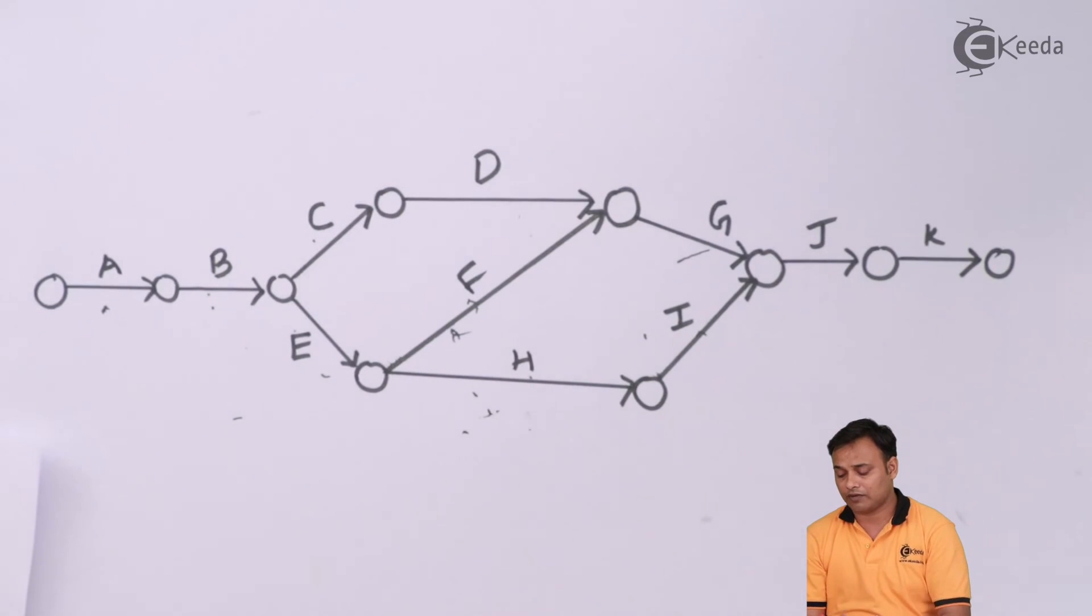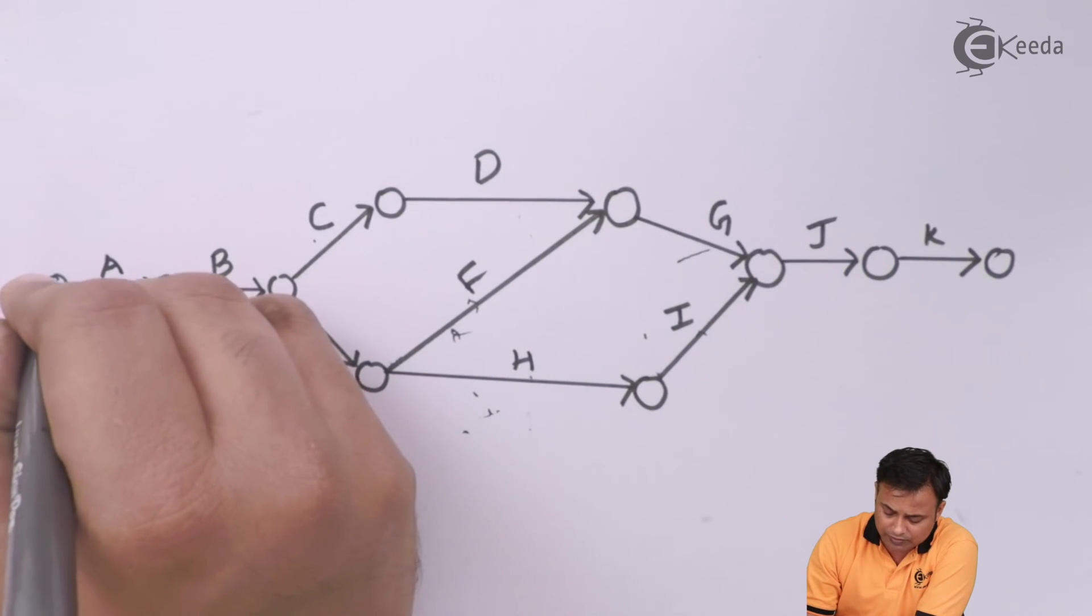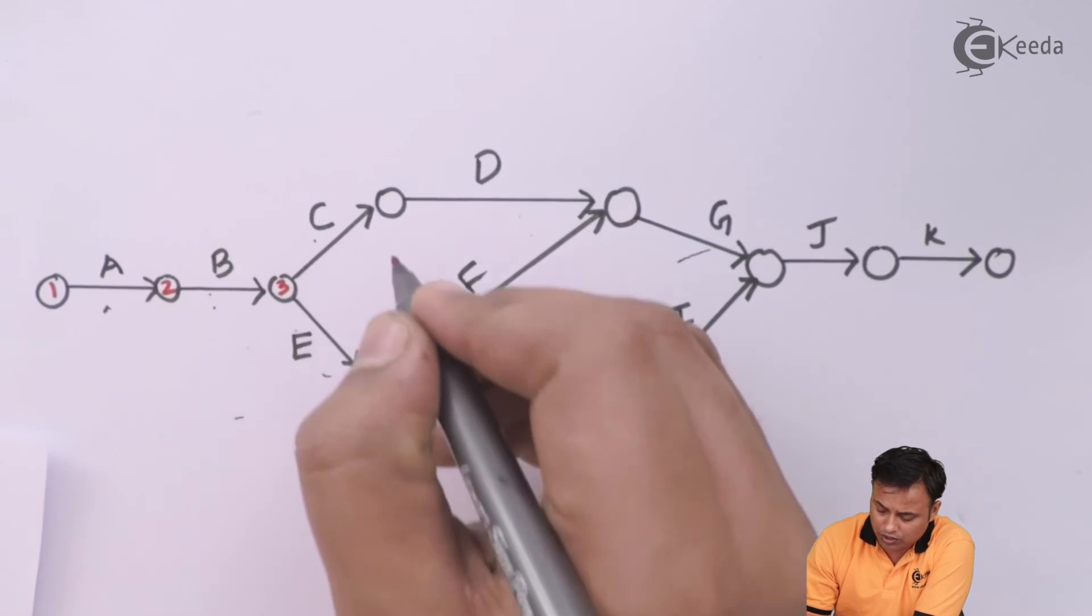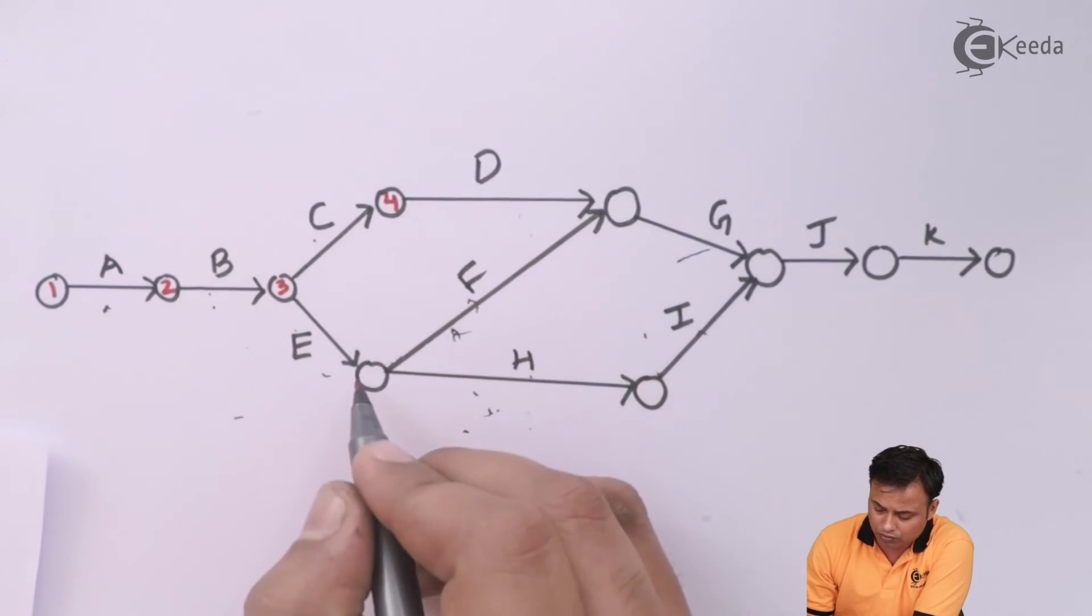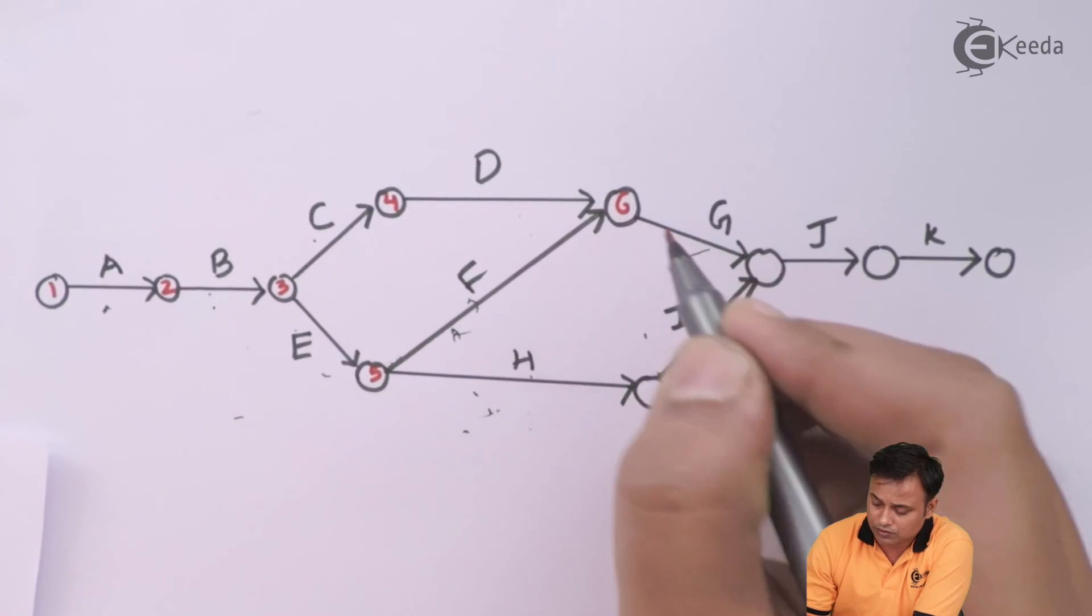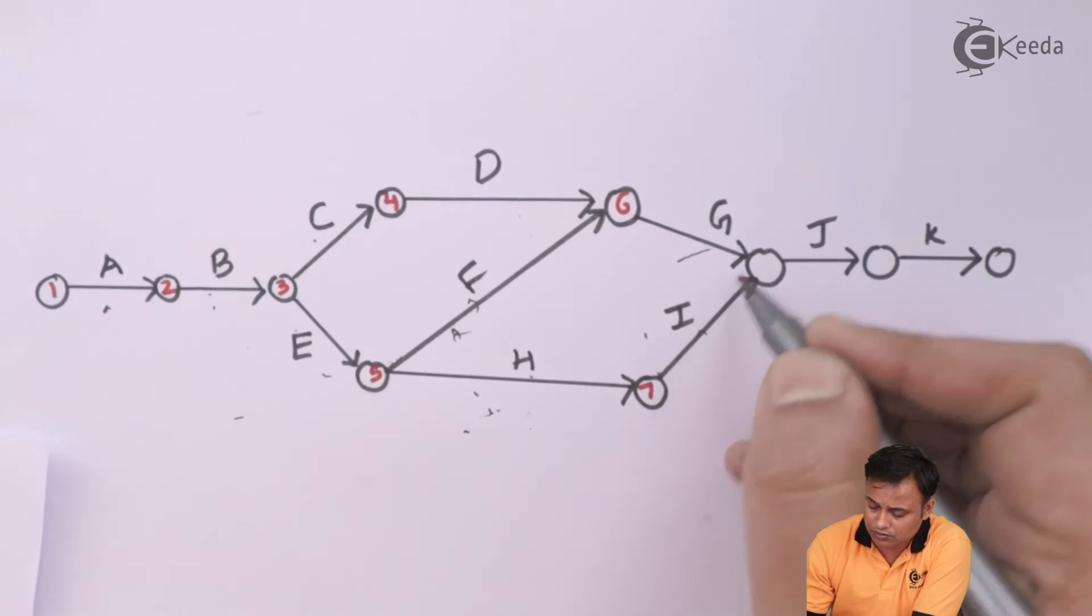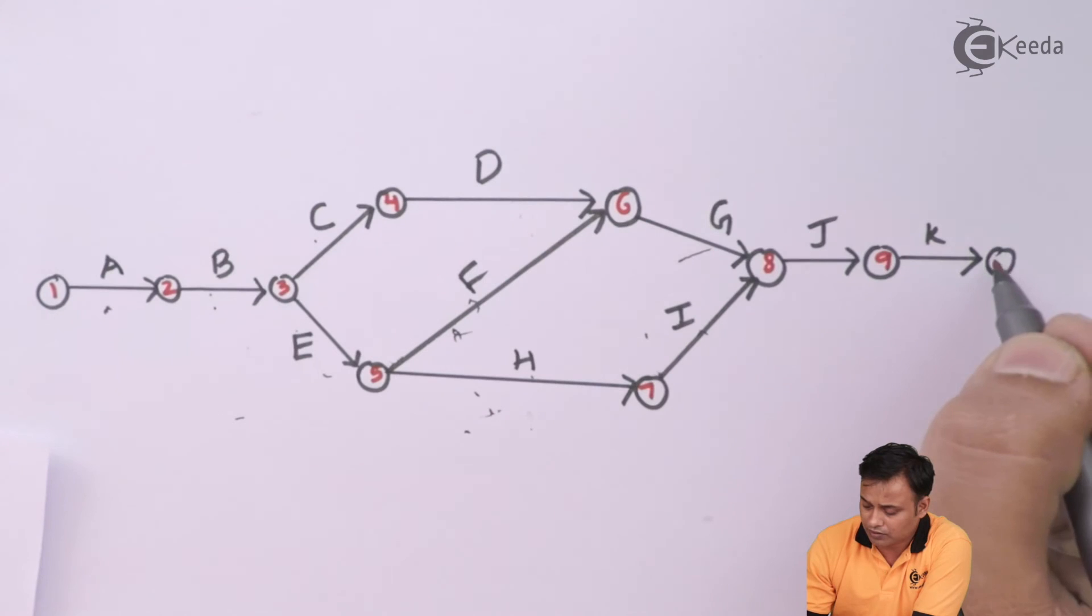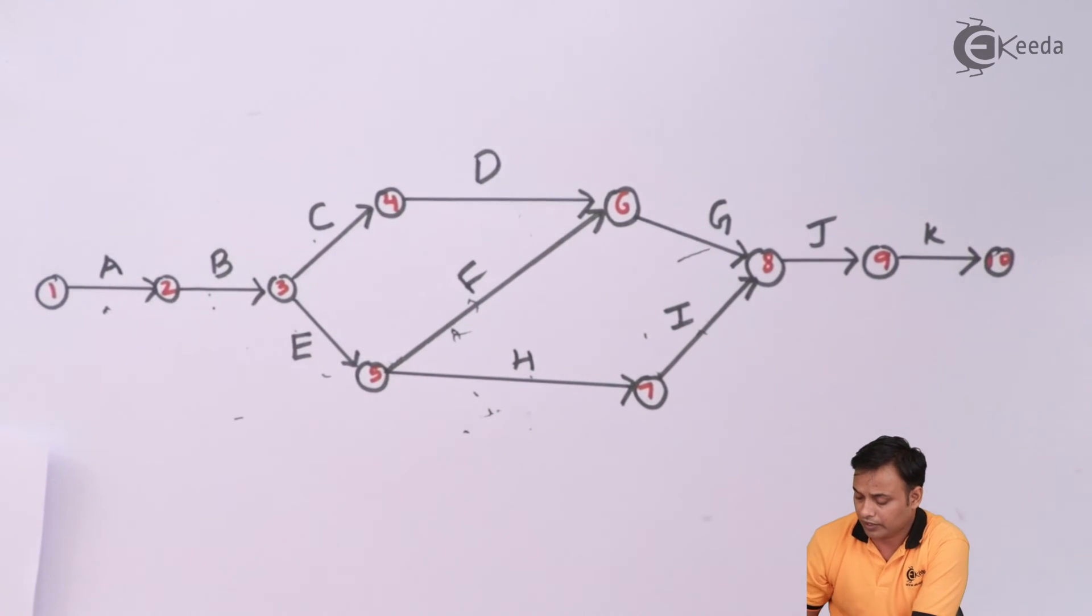Now numbering the diagram. I will always prefer to draw the numbers from left to right. So left-most is simply 1, 2, 3, 4, 5, 6, 7, 8, 9 and 10.